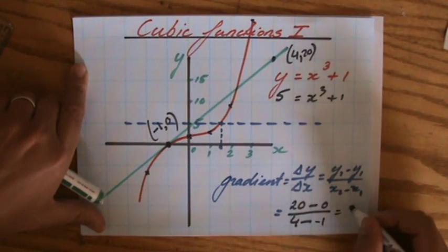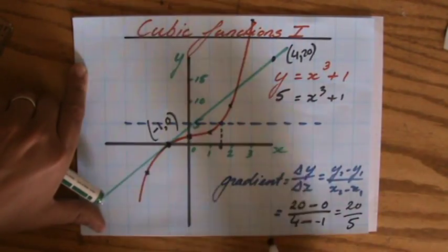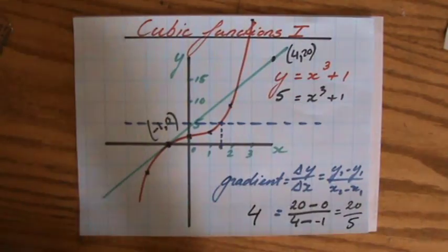Be careful with those signs there, 20 over 5, so my gradient is going to be 4.